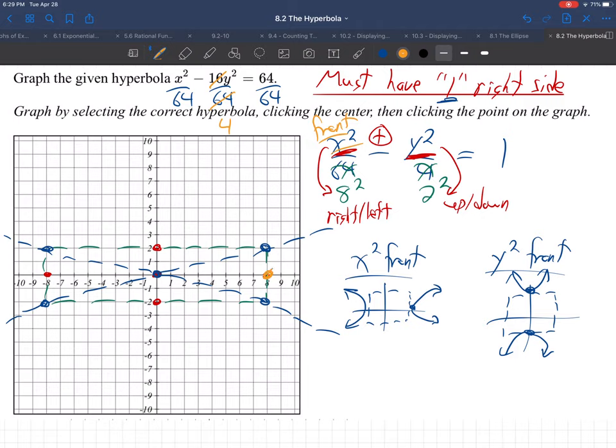So, our branches are going to go right and left. Starting in the middle of the box, it'll go right. In the middle of the box here, it will go left. There we go.